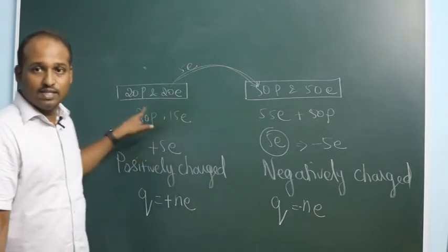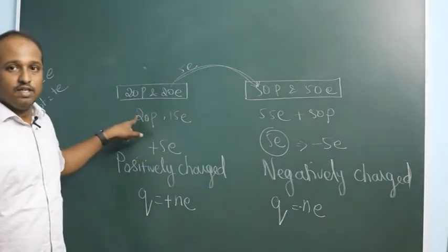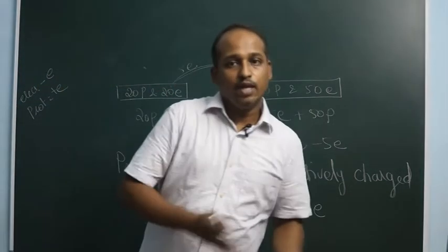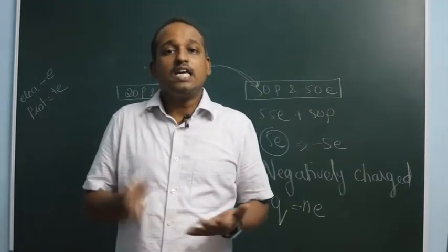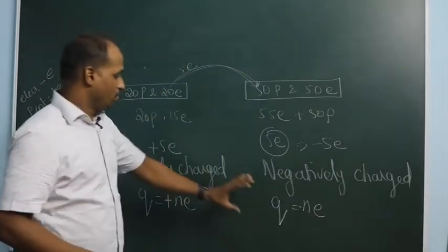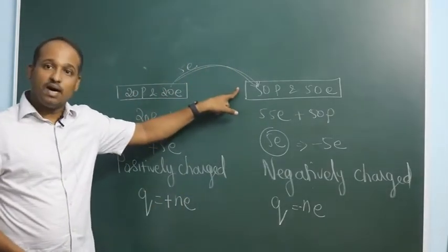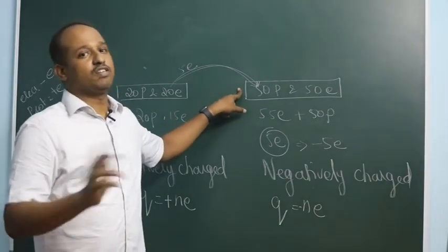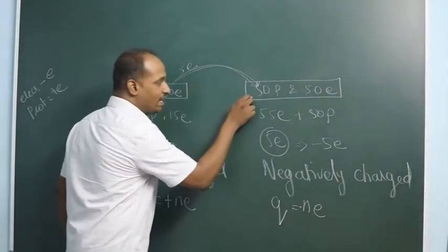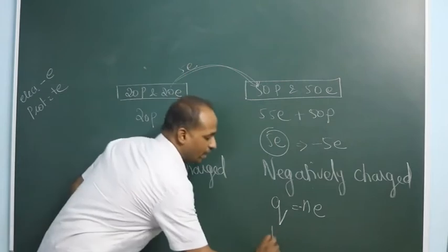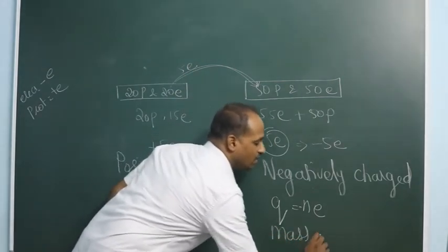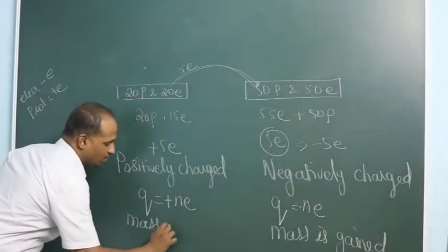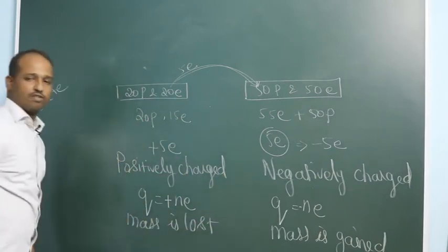In this process of frictional electricity we have created two charged objects: one negatively charged and one positively charged — equal in magnitude but opposite in sign. Whenever you rub two different materials, both get charged equally but in opposite ways. Since electrons get transferred, mass is also transferred in the process of charging.